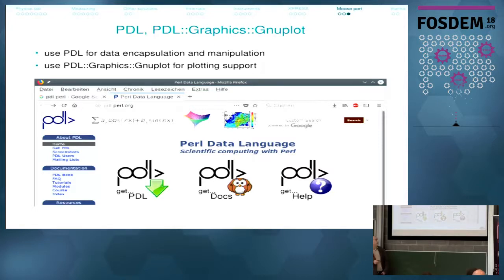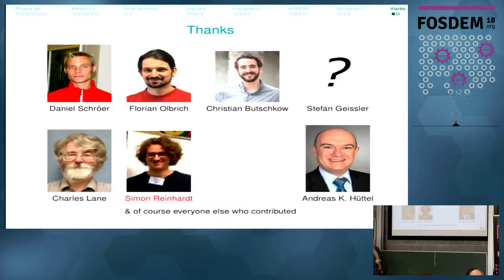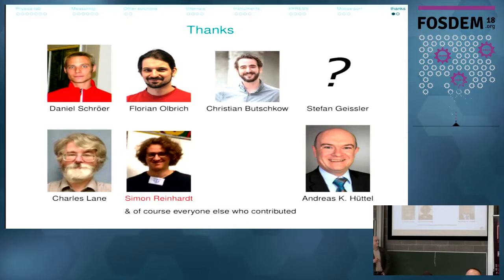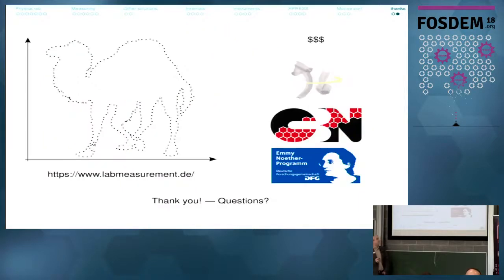I'm not the only person involved. Daniel started it 11 years ago, Florian introduced the layer model, Christian, Bulchkov, and Stefan Geisler made the express layer for fast script creation, Charles Lane introduced code for oscilloscopes — they use this at particle accelerators — and Simon is doing all the work porting it to Moose. All the details are in the Git log. Thanks for your attention.